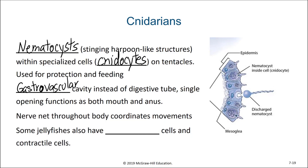There's no centralized nervous system, but there is a nerve net throughout the body of the cnidarian to coordinate its movements. Some jellyfish also have additional sensory cells and contractile cells, which allow them to receive information from their environments and respond accordingly.